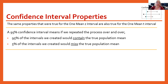For example, a 95% confidence interval means if we repeated this process over and over, 95% of the intervals we create would contain the true population mean, and 5% of those intervals would miss the true population mean.